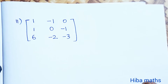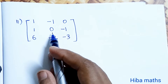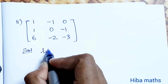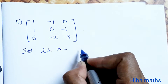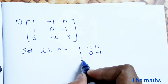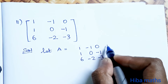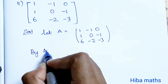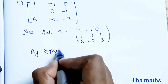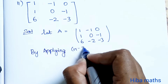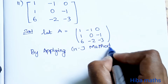Now we will see the second question. The second matrix is [1, -1, 0; 1, 0, -1; 6, -2, -3]. Let A equal this matrix. By applying the Gauss-Jordan method, we set up the augmented matrix [A | I3].